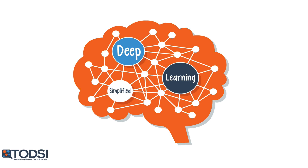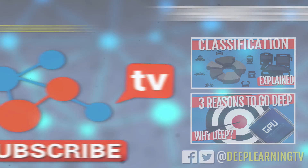Deep nets are the current state of the art in pattern recognition. But it's worth noting that neural nets have been around for decades. So you might be wondering, why did it take almost 50 years for deep nets to come onto the scene? Well, as it turns out, deep nets are very hard to train, which we will see in the next video. Thank you.